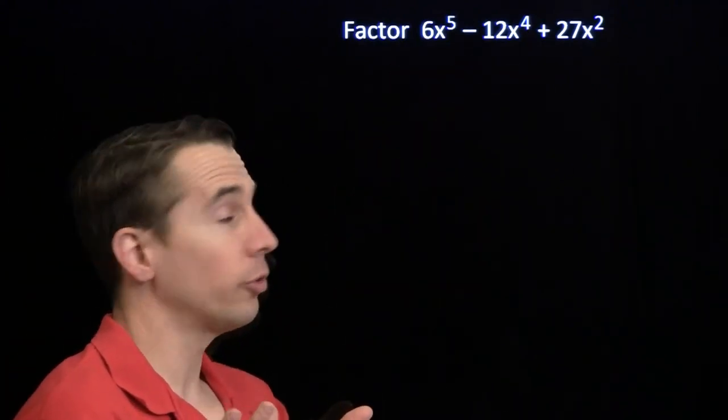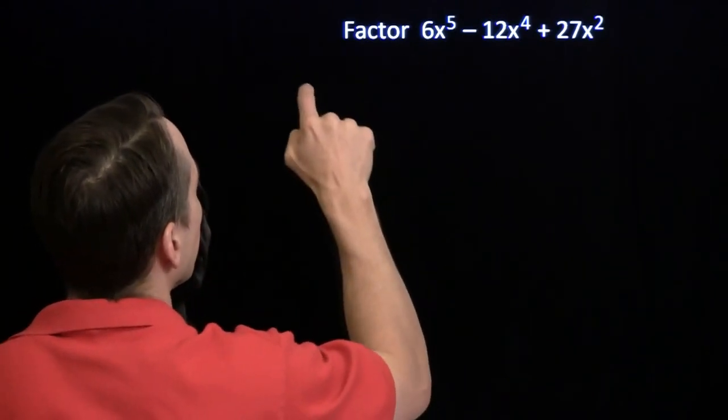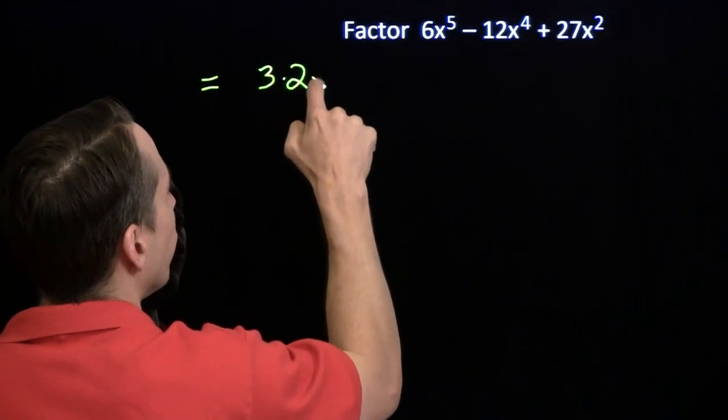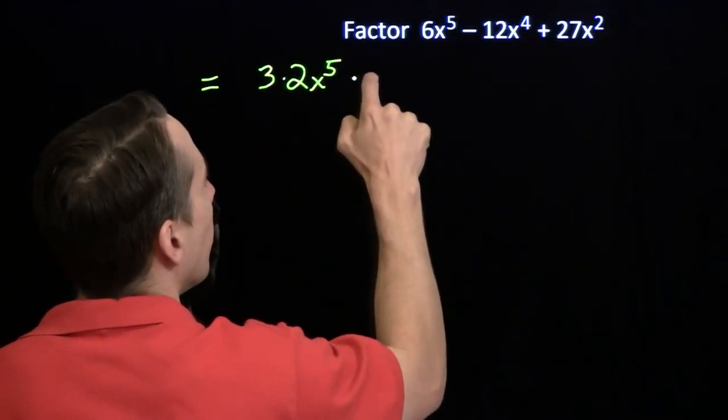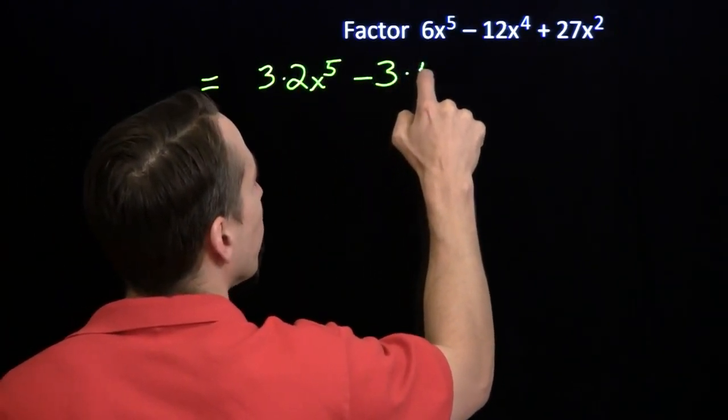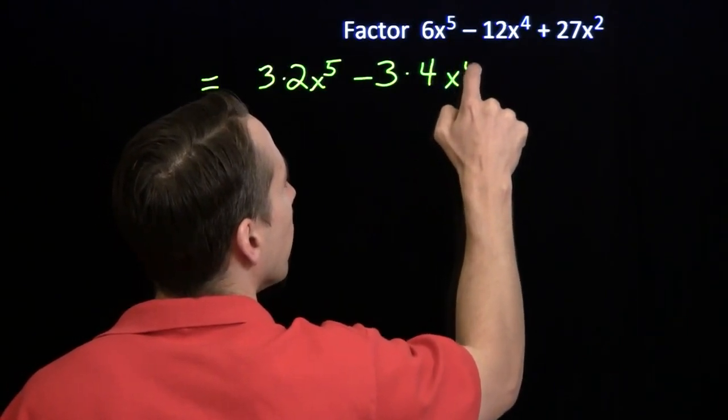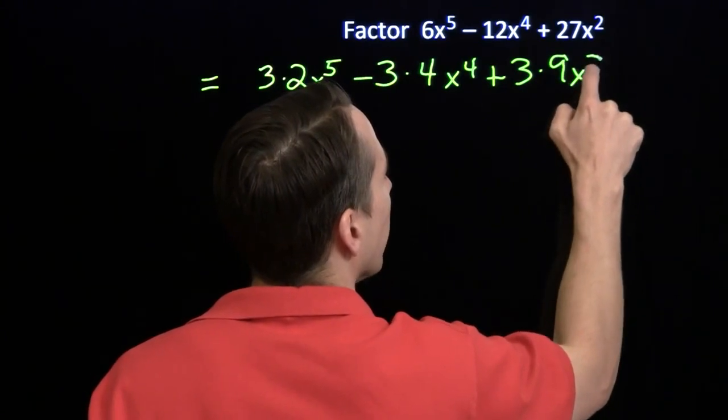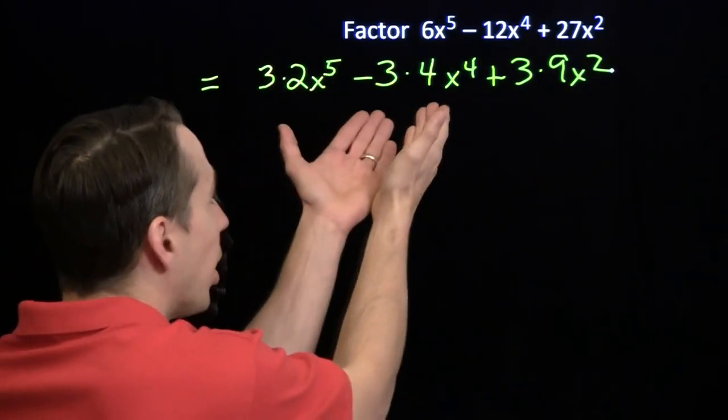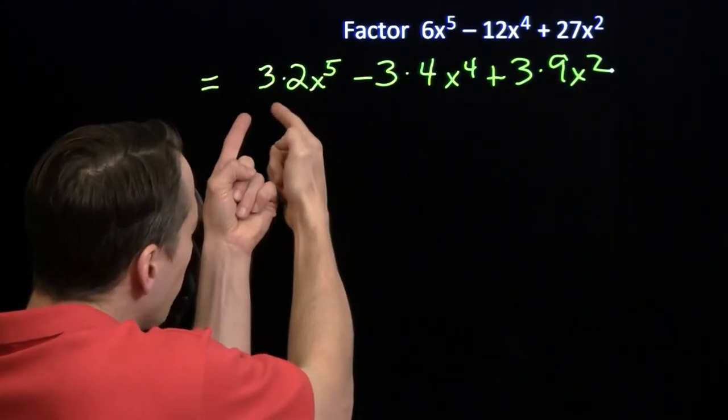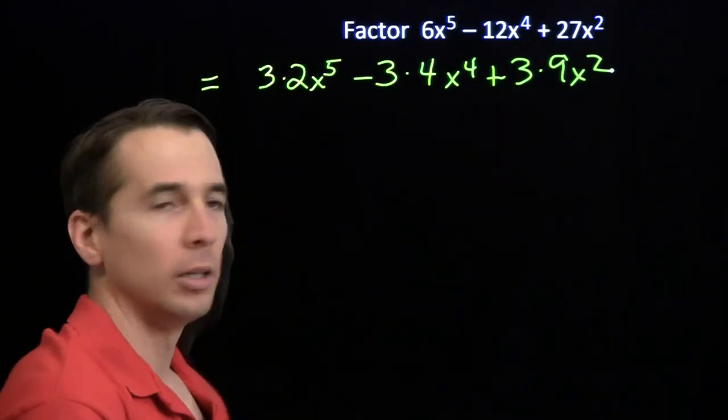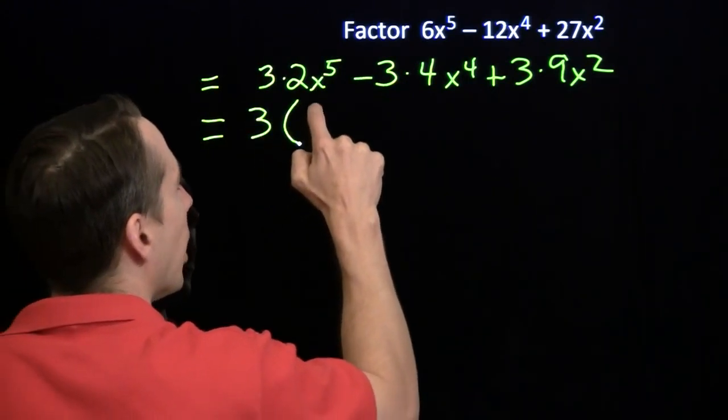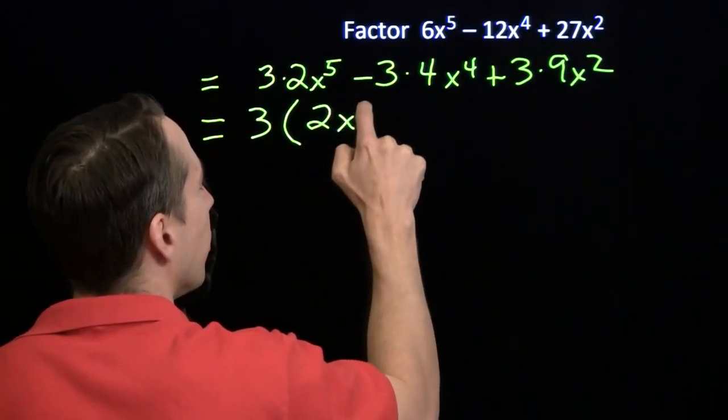So I can look at this as 3 times 2x to the 5th minus 3 times 4x to the 4th plus 3 times 9x squared. Now I have 3 products, and each one of them has a 3 in it. I can factor out the 3. Just using the distributive property here, we're factoring out the 3.